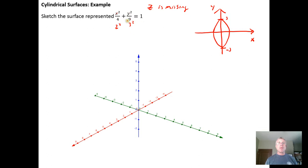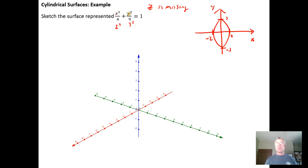We want to remember that the numbers getting squared determine the major and the minor axes on the ellipse. Because 2, the smaller number, is going with the x, that's why we're running from negative 2 to 2 on the x axis. And because the larger number 3 is with the y variable, we're running from negative 3 to 3 on the y axis.